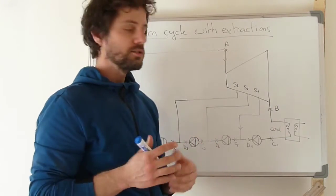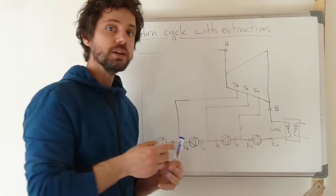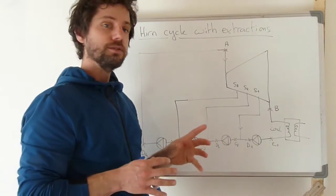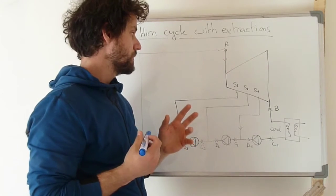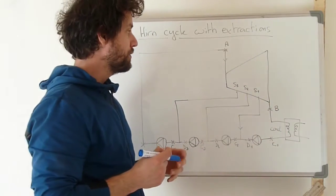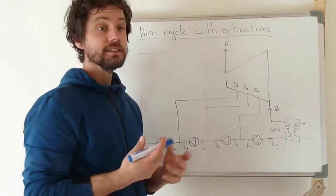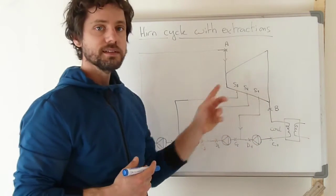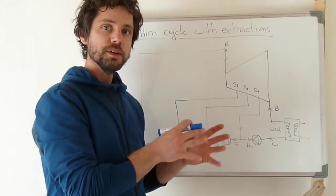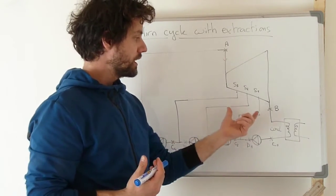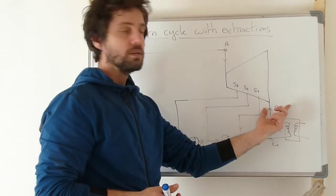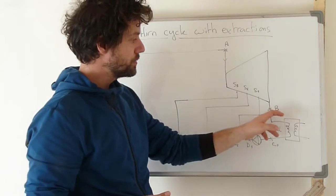When we perform extractions, the mass flow rates are different depending on where we are inside the cycle. The total mass flow rate enters the turbine at point A, but at point B we don't have the full mass flow rate because some of it was extracted. For each extraction, a small percentage of the flow rate is extracted, and the remaining flow rate — usually something like 80% to 90% of the total — remains at point B.